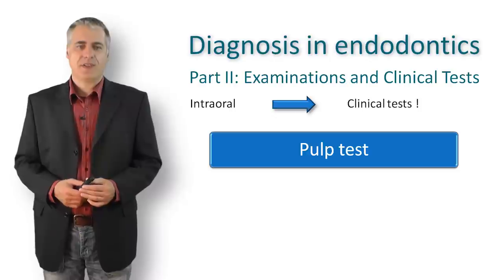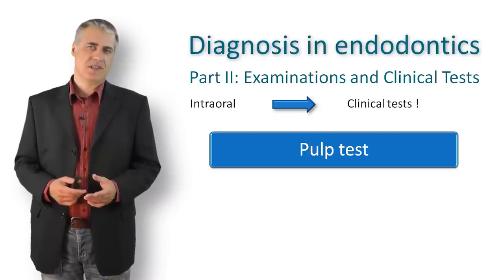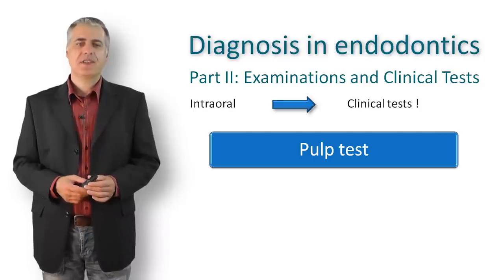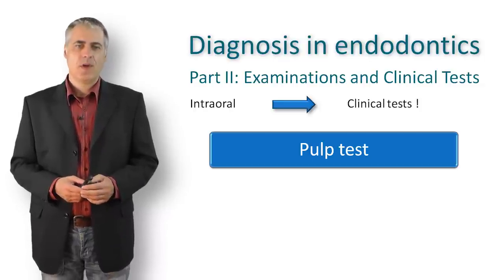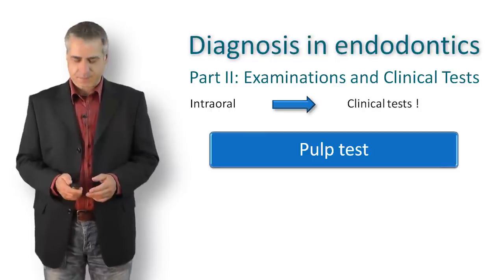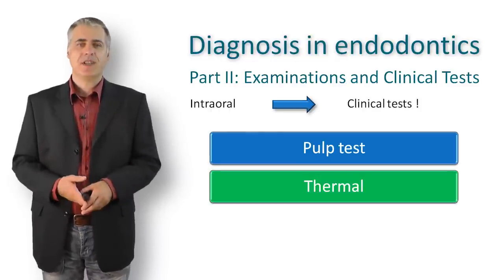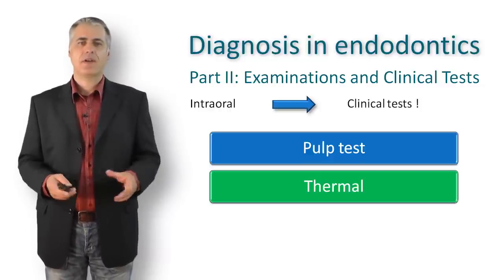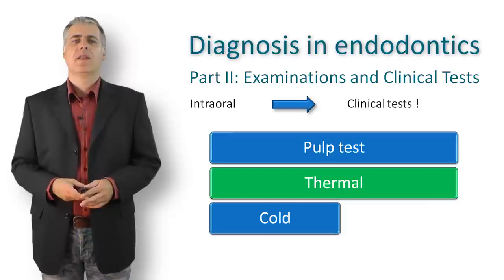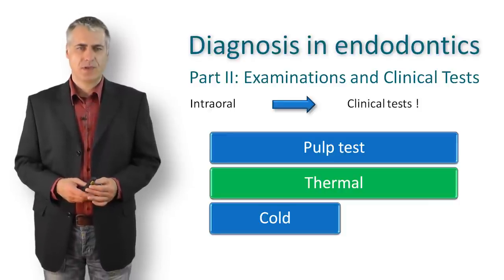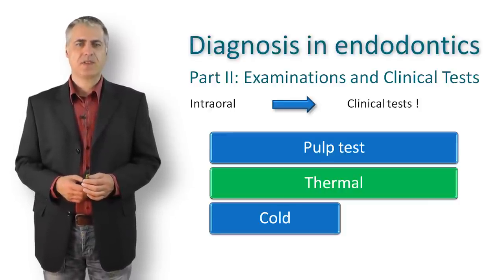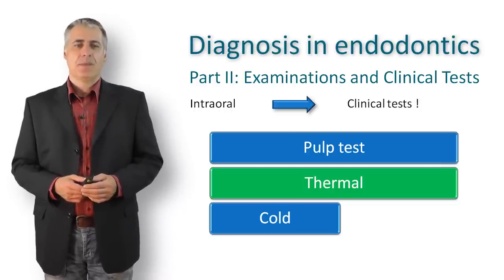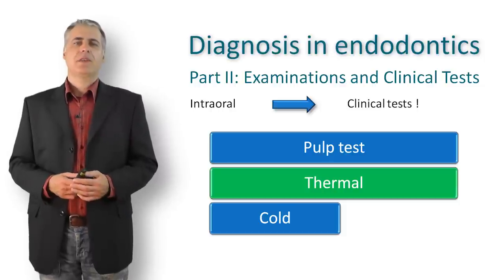Especially in older patients, calcifications are a common problem. A normal response is the immediate disappearance of the resulting sensation when the stimulus is removed. The most common pulp test is the thermal test, which can be performed as a cold test or a heat test. The cold test is performed with frozen carbon dioxide and is a reliable method to test for vital pulp tissue.